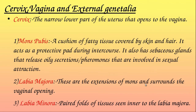The mons pubis is a cushion of fatty tissue covered by skin and hair. It acts as a protective pad during intercourse. It also has sebaceous glands that release oily secretions or pheromones involved in sexual attraction.